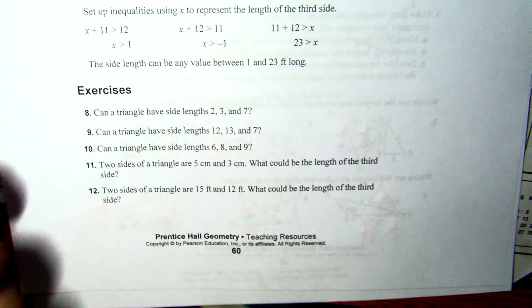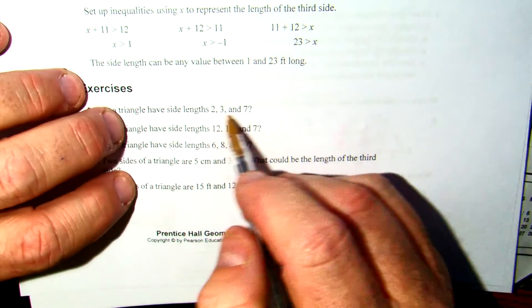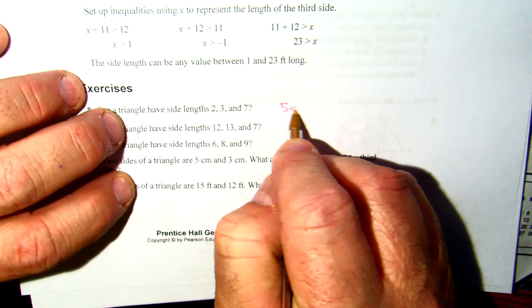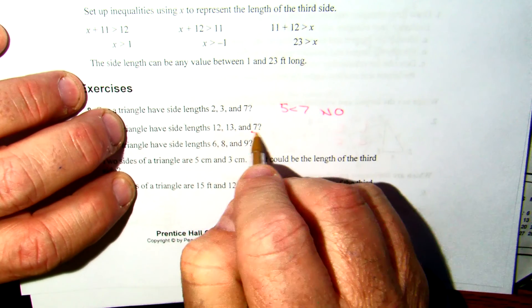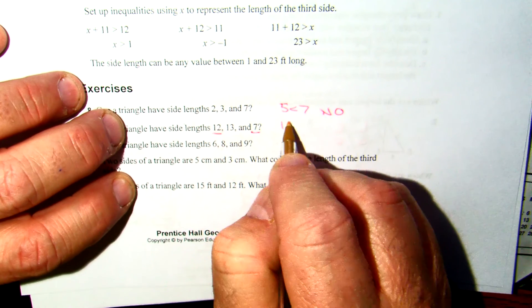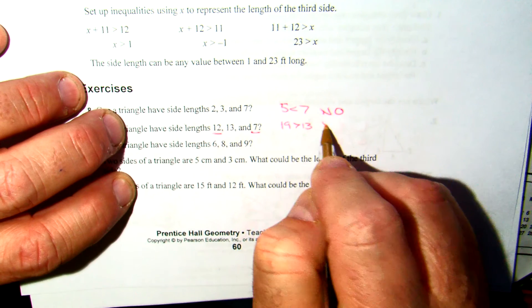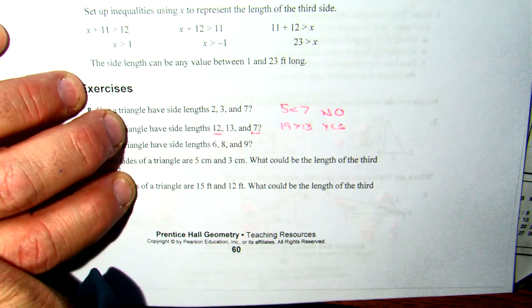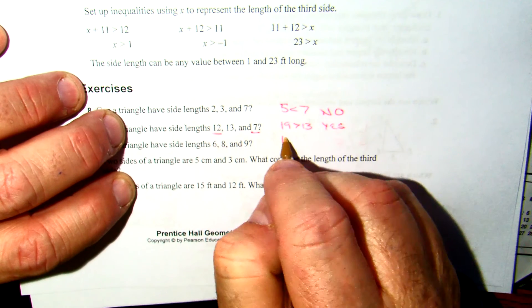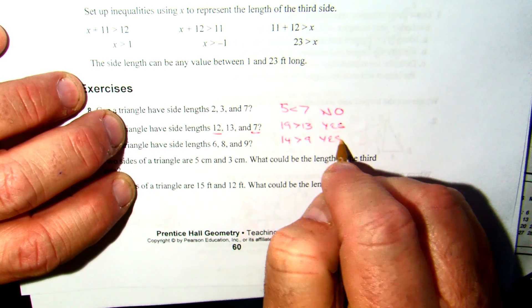If I go down to 8, can a triangle have side lengths 2, 3, and 7? 2 plus 3 is 5. Since 5 is less than 7, no. Make sure you get the smallest. 7 and 12 is 19. Since 19 is greater than 13, the answer is yes. 6 plus 8 is 14. Since 14 is greater than 9, I have a yes as well.